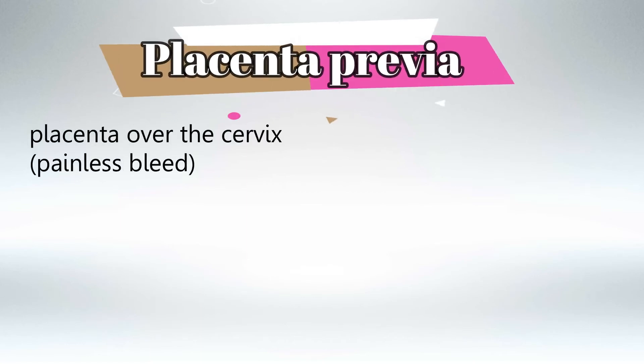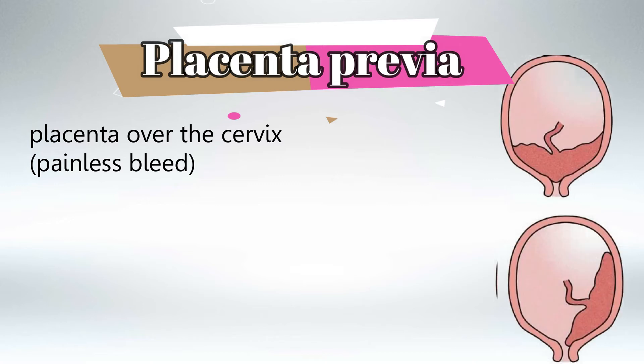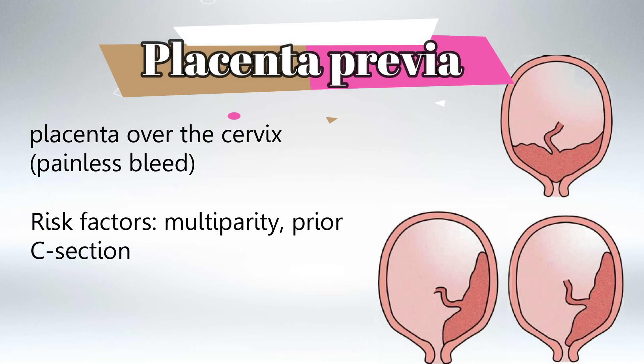Next we'll talk about placenta previa, which is a placenta overlying the cervix. This can be complete, partial, or marginal. Risk factors are multiparity and prior C-sections. It's important to know that it presents as painless bleeding.